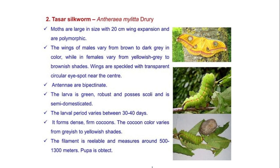The next non-mulberry silkworm is the tazar silkworm. Its scientific name is Antheraea mylitta. The moths are large in size with 20 centimeter wing expansion and are polymorphic, coming in different colors. Male wings vary from brown to dark gray, while female wings vary from yellowish-gray to brownish. Wings are speckled with a transparent circular eye-spot near the center. They also possess bipectinate antennae.